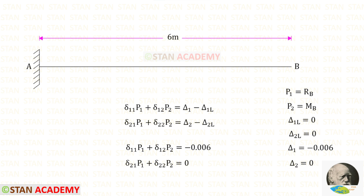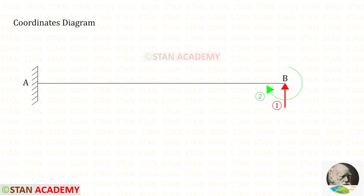To find δ11, δ12, δ21 and δ22, we are going to use the unit load method. In the unit load method, we have to find the bending moments M, M1, and M2. We have to find M using the given loads, but in this beam there is no load, so M will be 0. No need to find that.